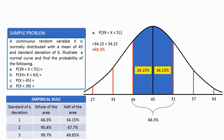To understand this better, let's take a sample problem. A continuous random variable X is normally distributed with a mean of 45 and a standard deviation of 6. Illustrate a normal curve and find the probability of the following. Letter A: 39 is less than X less than 51. To get the x-values, we subtract the standard deviation from the mean: 45 minus 6 equals 39, then 39 minus 6 equals 33, then 33 minus 6 equals 27.